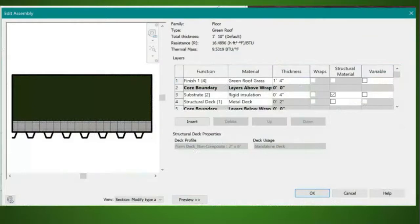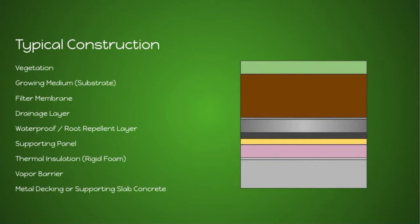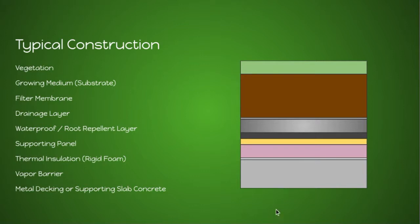It's actually a lot more complicated than this. Typical green roof construction has vegetation at the top, a growing medium underneath that, a filter membrane under that, then a drainage layer — which could be something like gravel or a system designed for green roof drainage. Underneath that, there's usually some sort of supporting panel, and below that some sort of insulation, normally rigid foam. Then below that, you have a vapor barrier to separate this system from the supporting structure. Underneath all of this, if it's a thin green roof, you would use metal decking; if it's thick, you would have a concrete slab to support the additional weight.